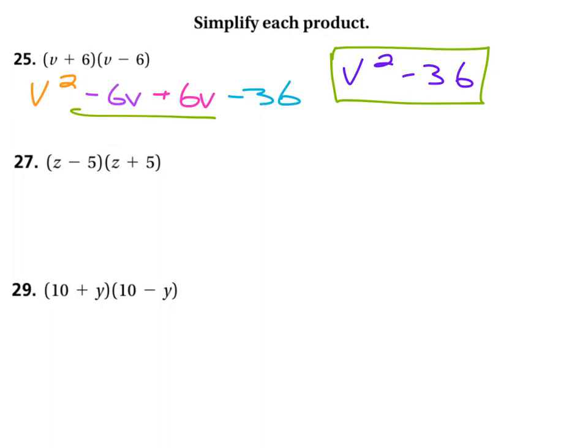When you have two binomials and they look exactly alike, they've got the same term in the front and the same term in the back, but with different signs in between them.